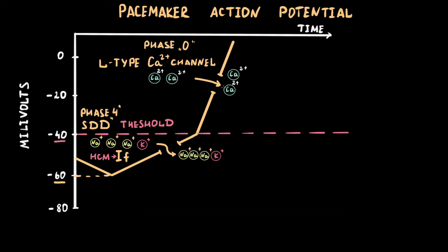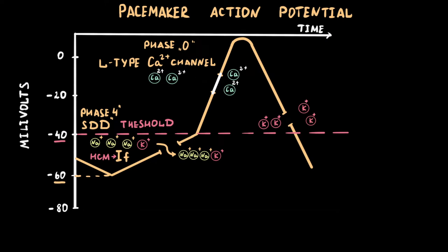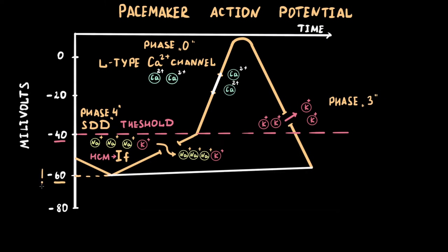The next phase after phase 0 in a pacemaker cell is phase 3, so-called repolarization. It is characterized by inactivation of the L-type calcium channel and activation of efflux potassium channels. Potassium ions leave the cell and the membrane becomes more negative. When it reaches minus 60 mV, IF channels activate again, phase 4 starts, and the cycle repeats.